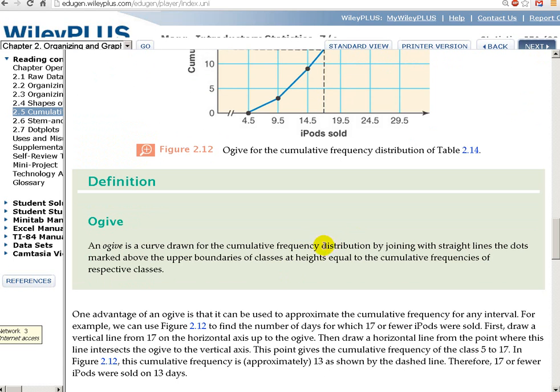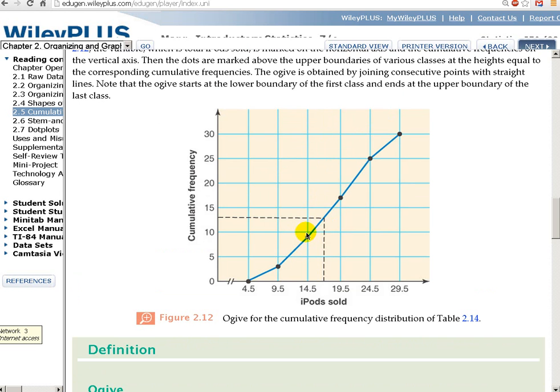So the upper boundaries of classes at heights equal, at heights, so the height above 9.5, is equal to the cumulative frequencies of the respective classes. So that sounds so confusing, but this picture is pretty obvious, I think.